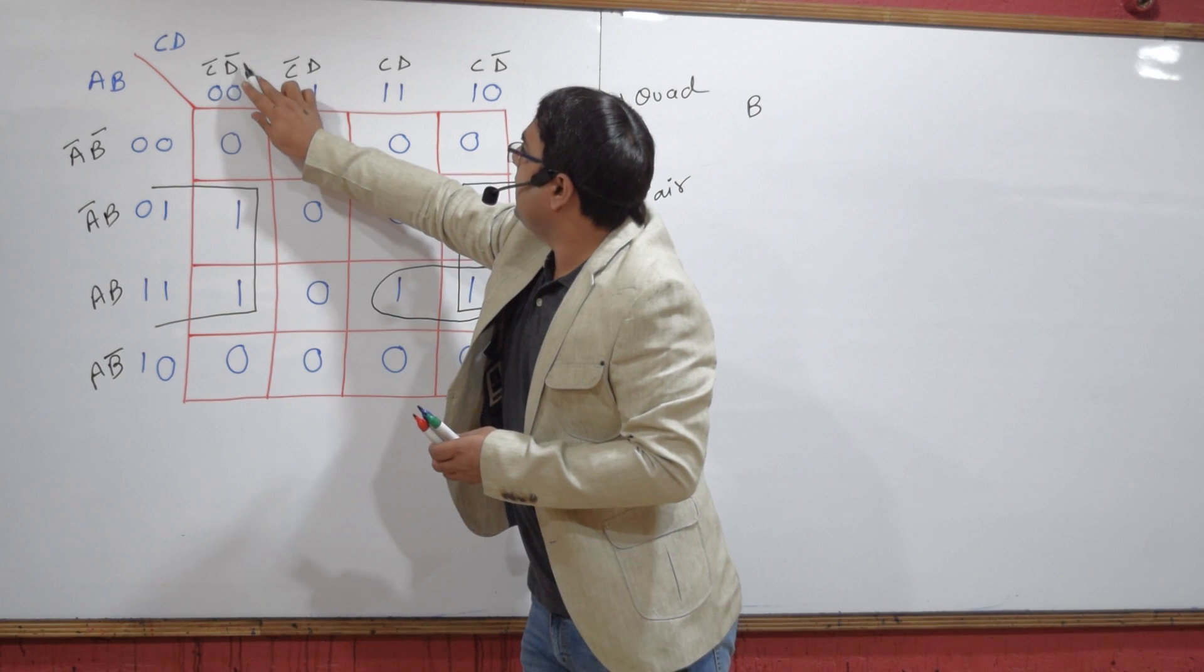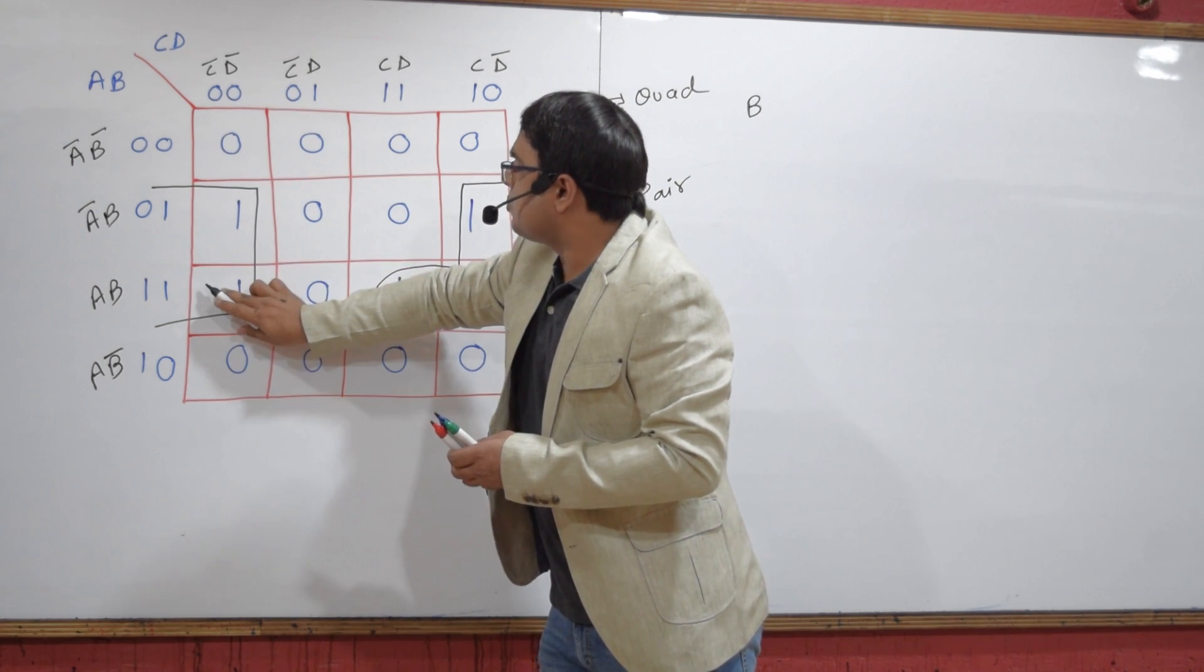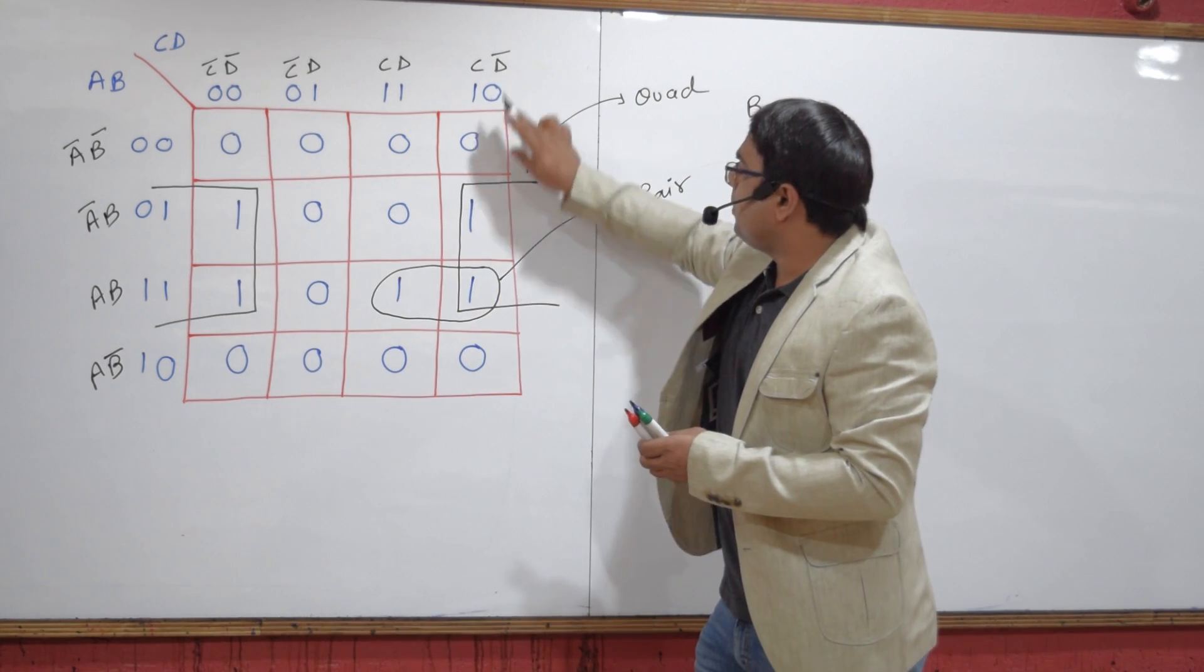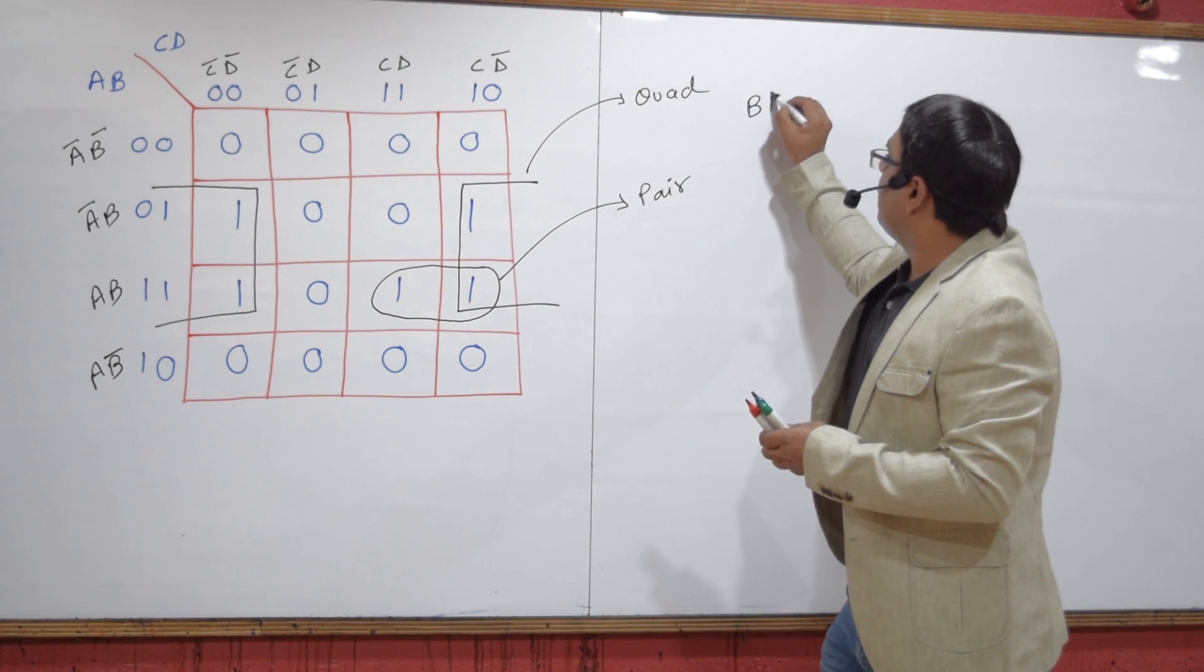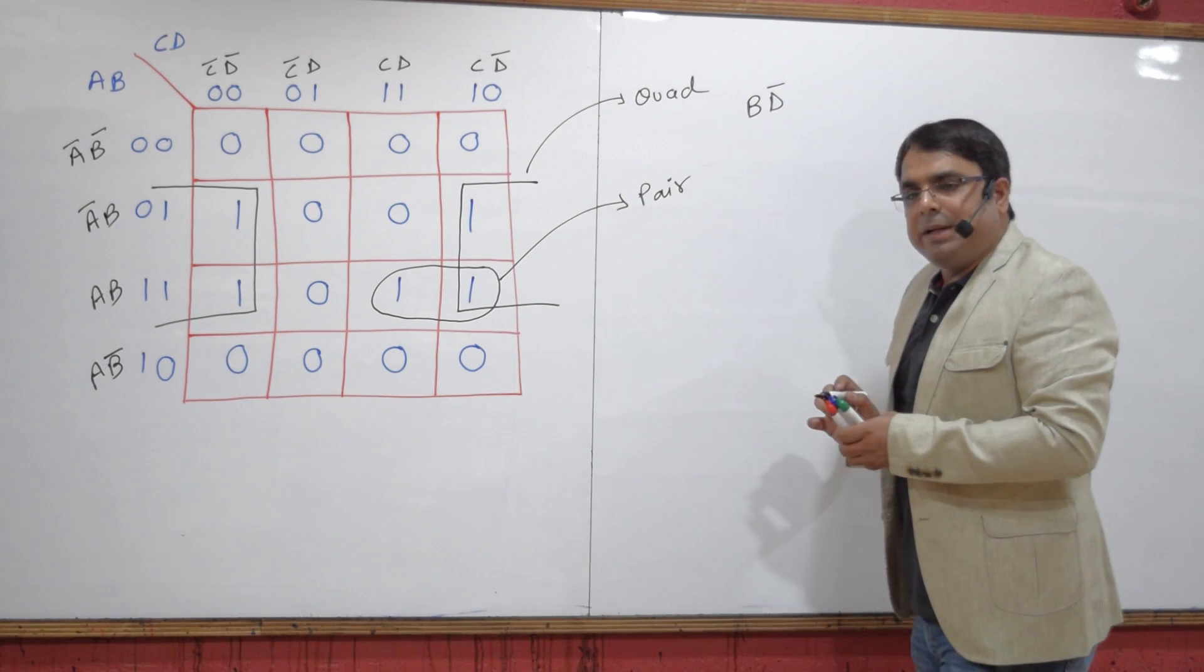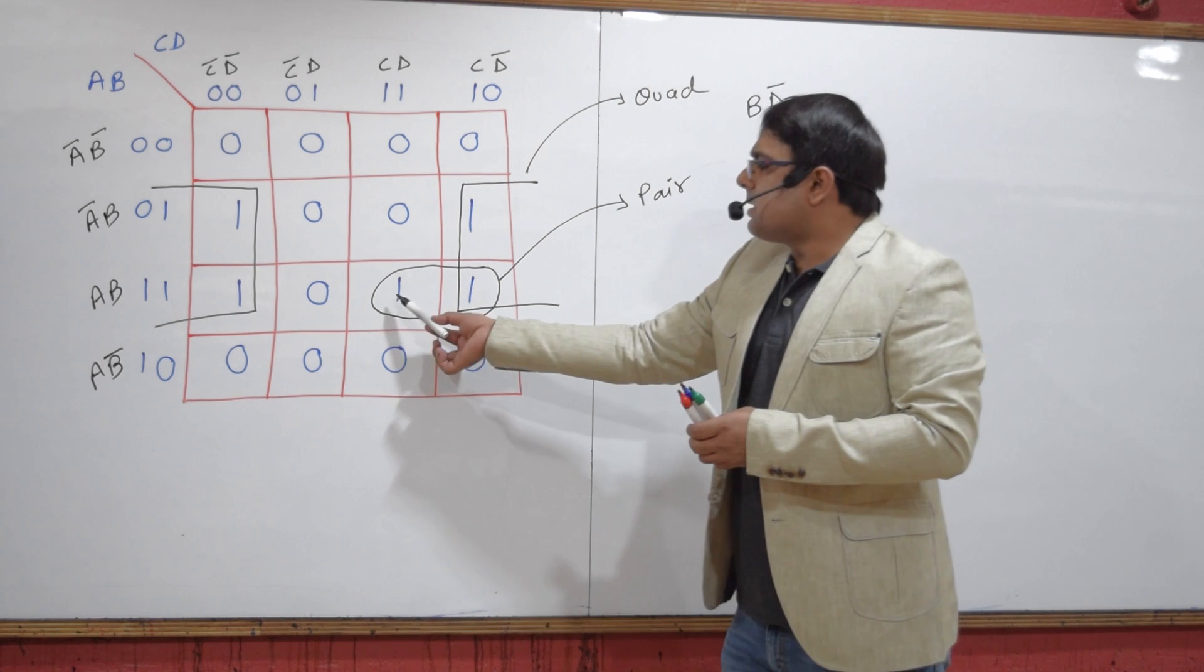You can also see D complement is common for these min terms. So this term will be B dot D complement. Now coming to this second group.